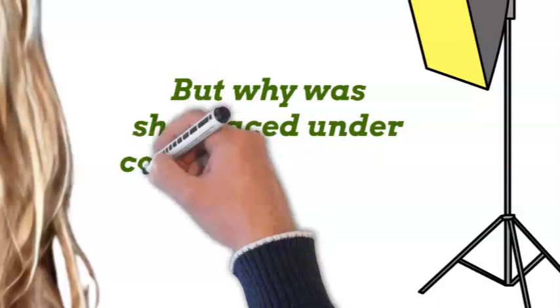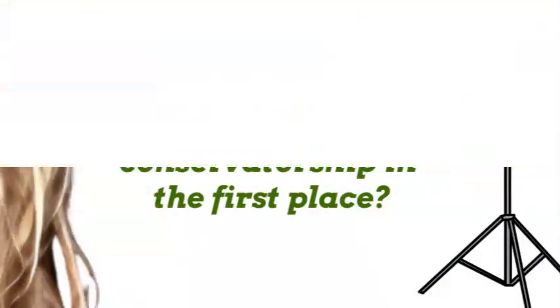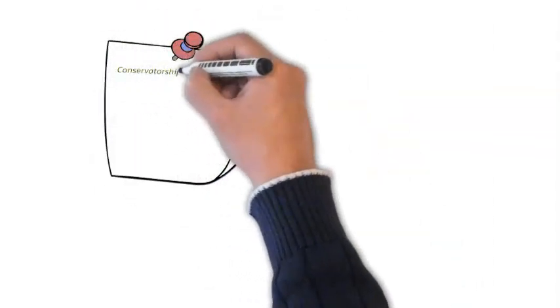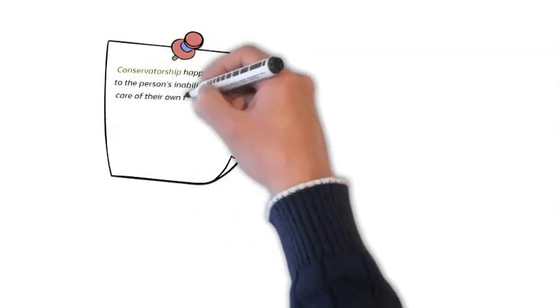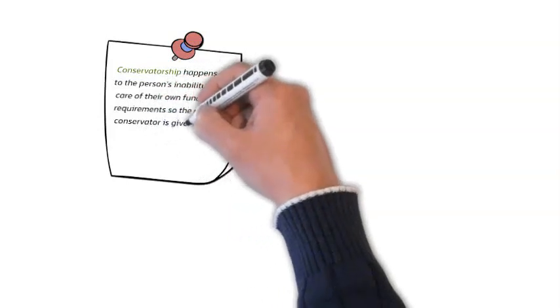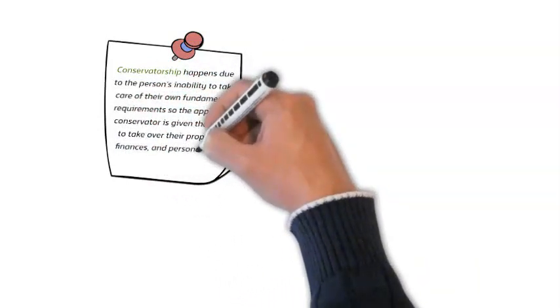But why was she placed under conservatorship in the first place? Well, if you didn't know, conservatorship happens due to the person's inability to take care of their own fundamental requirements. So the appointed conservator is given the power to take over their properties, finances, and personal affairs.